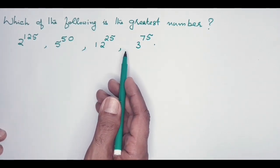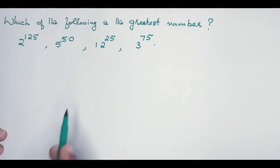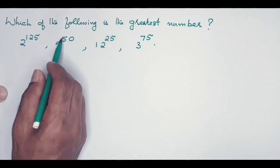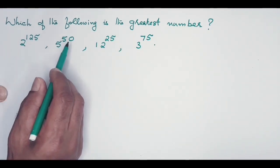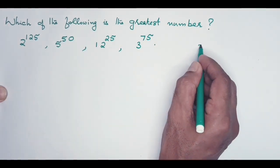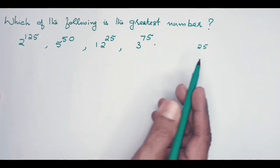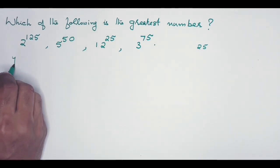If you look at the powers of these numbers for comparison, they are all multiples of 25. So the first step is to write the exponent or the power as a multiple of 25. So the numbers are: